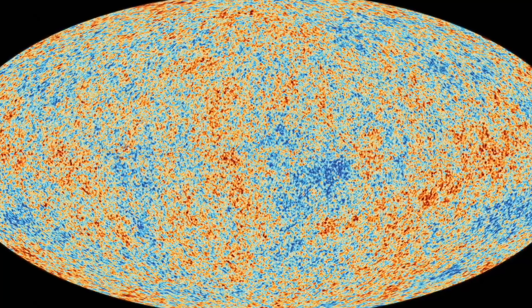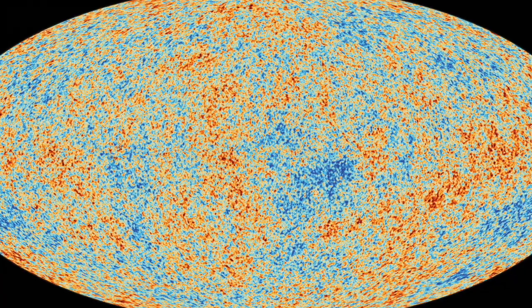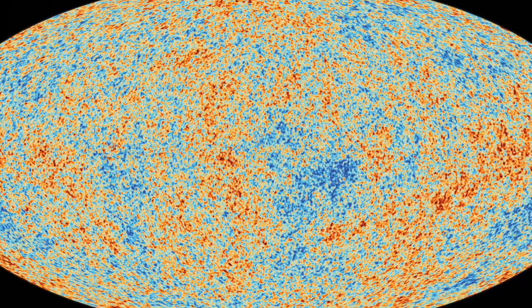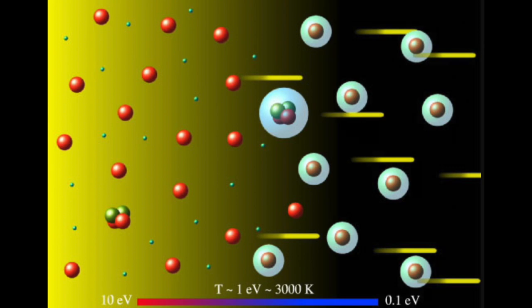The only known physics capable of producing such radiation uniformly from all directions at once is the formation of the first atoms from the plasma of the early universe.